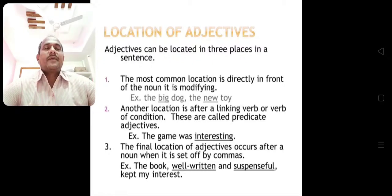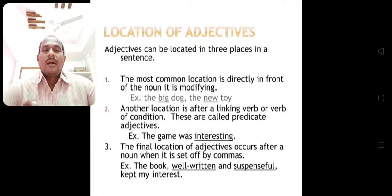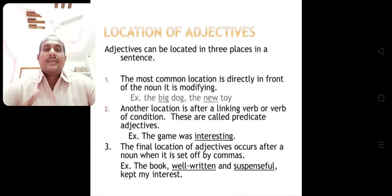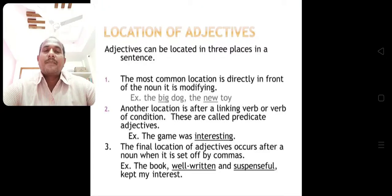Adjectives can be located in three places in sentences. The most common location is directly in front of the noun it modifies — for example, 'the big dog,' 'the new toy.' Another location is after a linking verb or verb of condition — called predicate adjectives — for example, 'the game was interesting.' The final location occurs after a noun when set off by commas — for example, 'the book, well-written and suspenseful, kept my interest.'